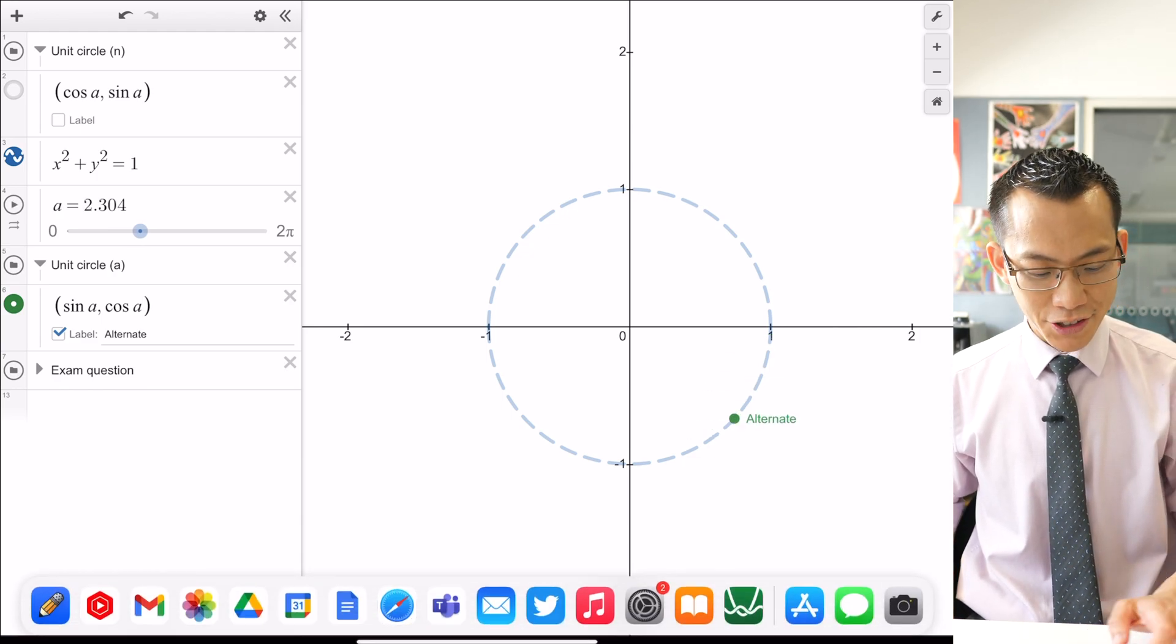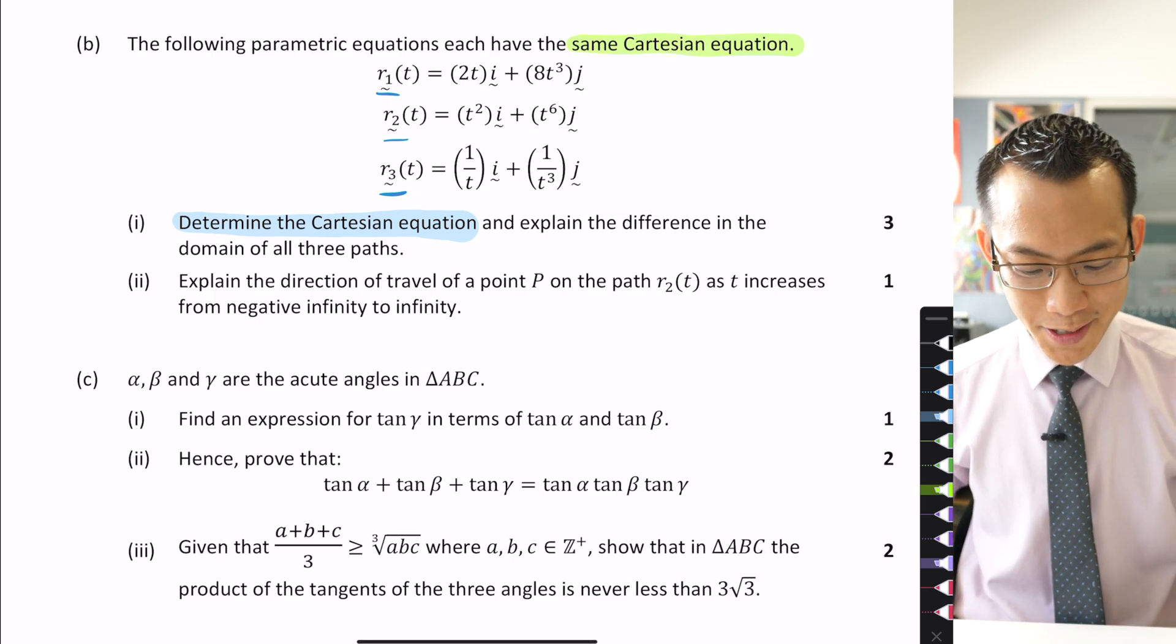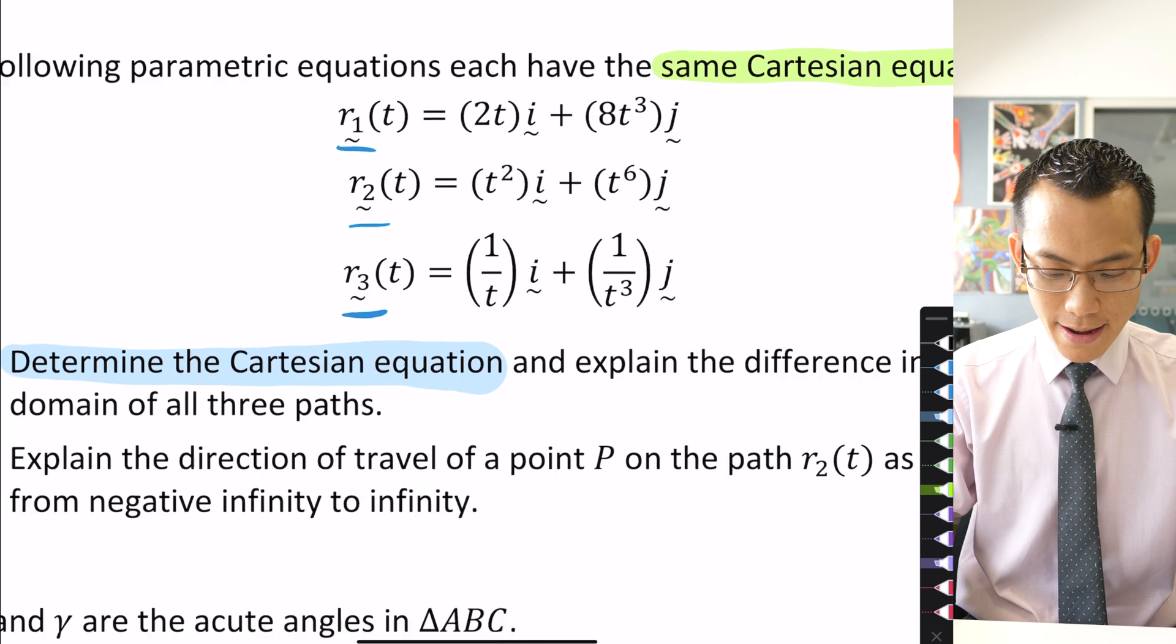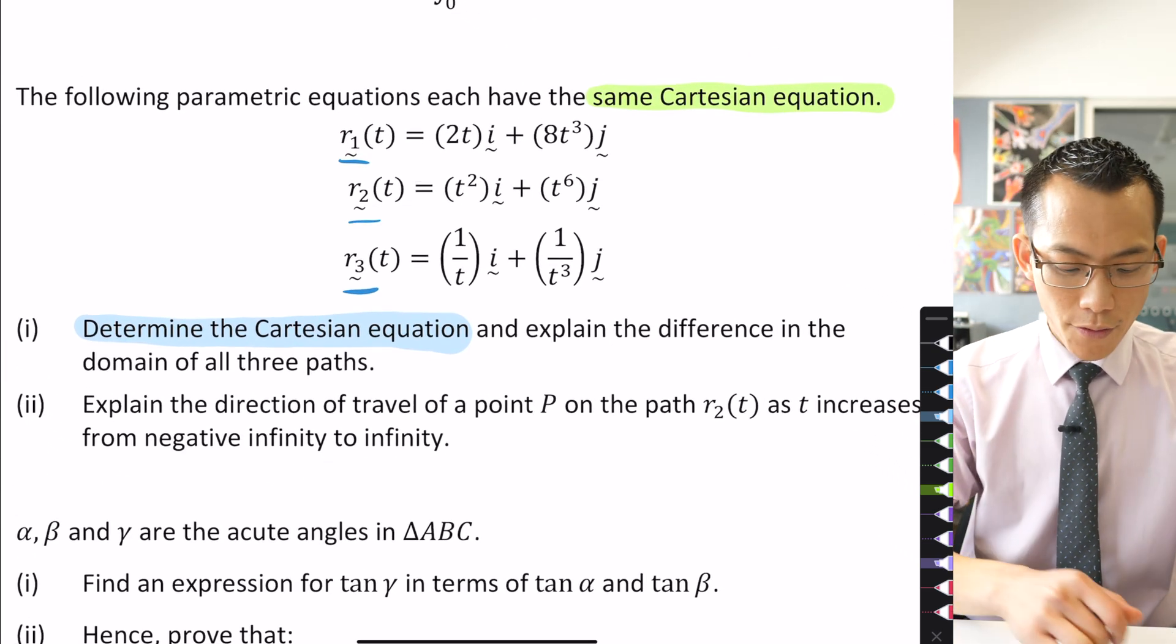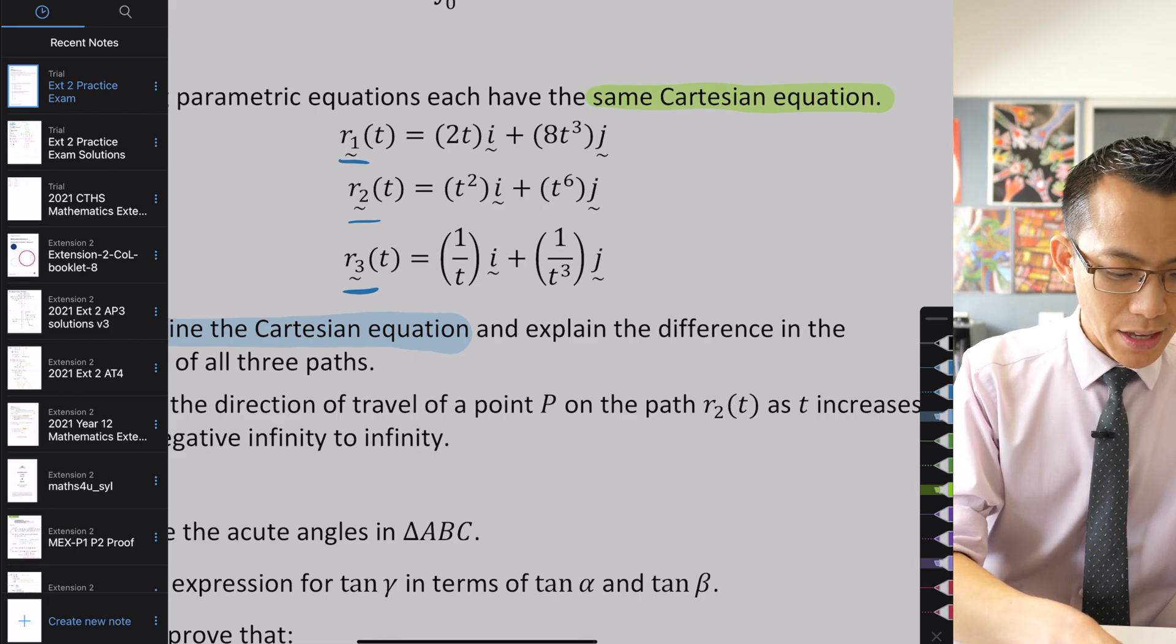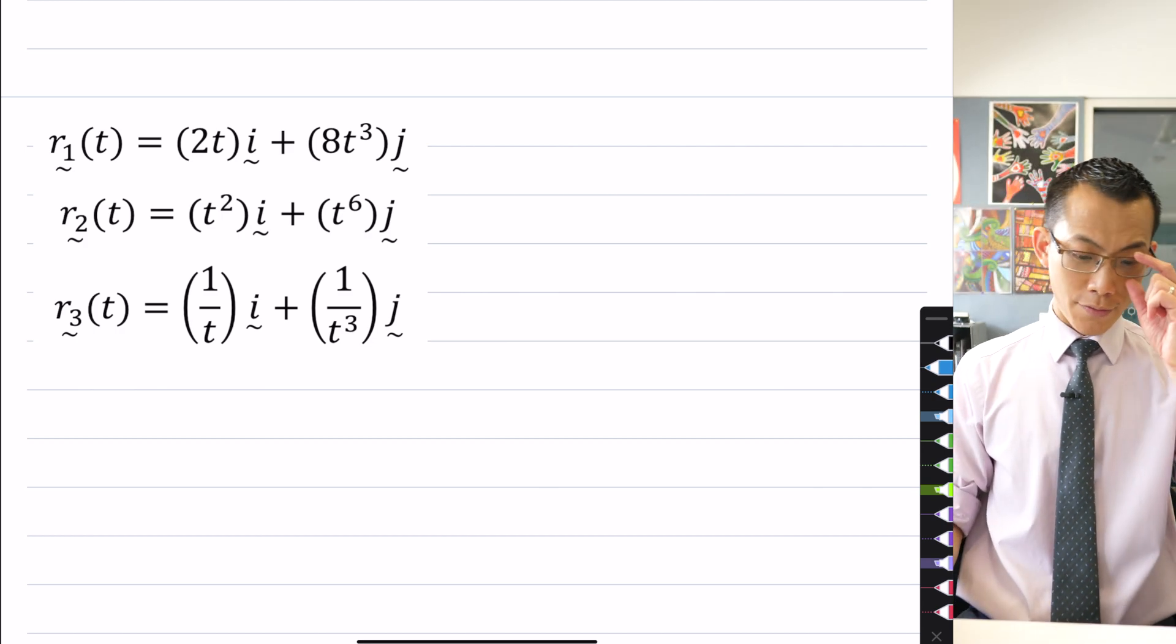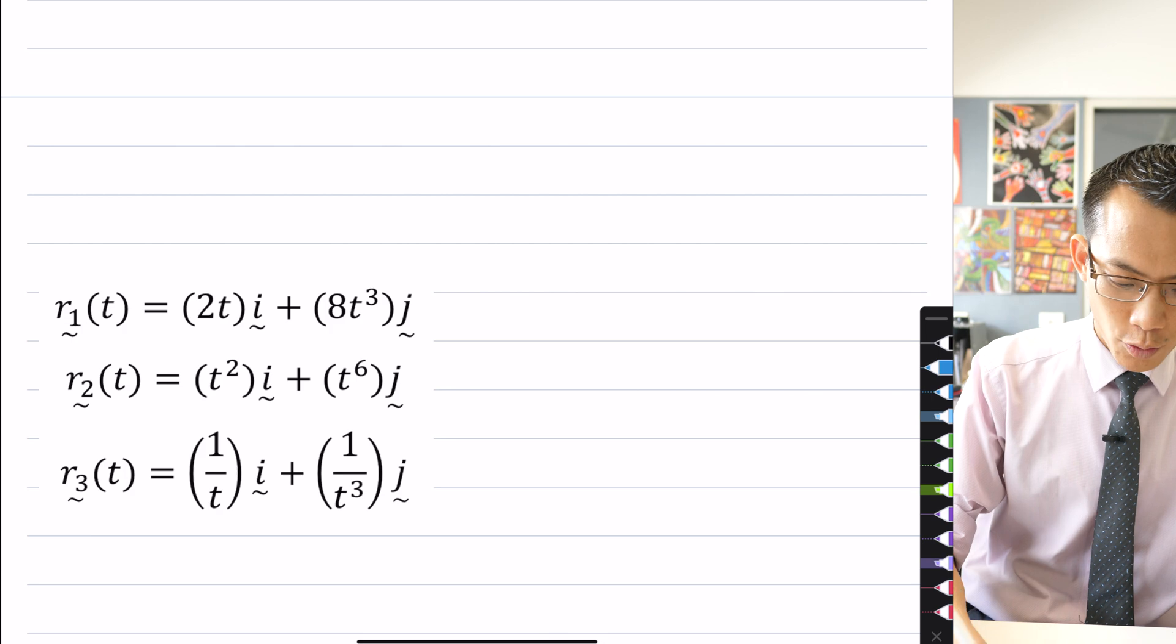Now we're ready to go back to our actual exam question, and I will return to Desmos to explore this a bit further, but let's think about what these equations can tell me. Particularly in part one it says explain the difference in the domain of all three paths. So let's explore each of these, we'll do them one at a time.